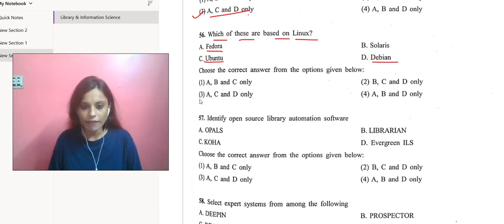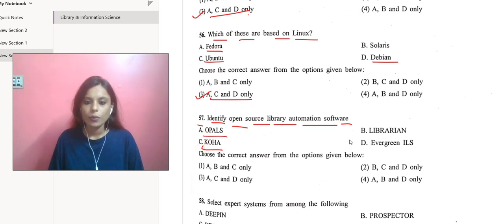Next question: identify the open source library automation software. We can include OPUS, we can include KOHA, we can include Evergreen ILS. So we are going with A, C, and D again, option three.